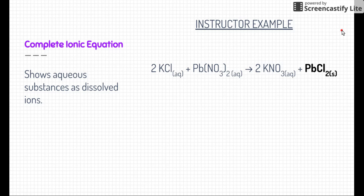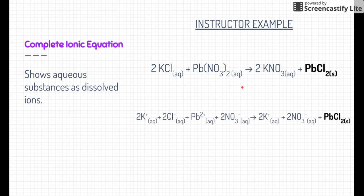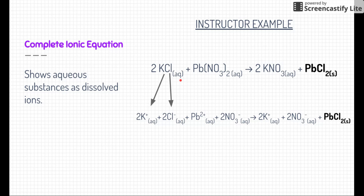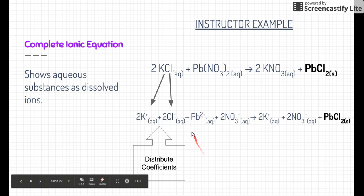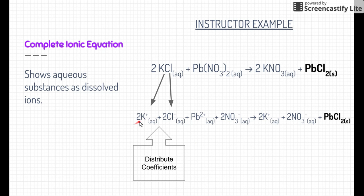Now we're going to take our molecular equation and turn it into a complete ionic equation. A complete ionic equation shows all the aqueous substances as dissolved ions. Starting with two potassium chloride (aqueous) — remember, aqueous means dissolved in water, and if an ionic compound is dissolved in water, each of its pieces break apart. So two potassium chloride becomes two K⁺ and two Cl⁻. You need to distribute coefficients: two potassium with a +1 charge and two chlorine with a −1 charge.